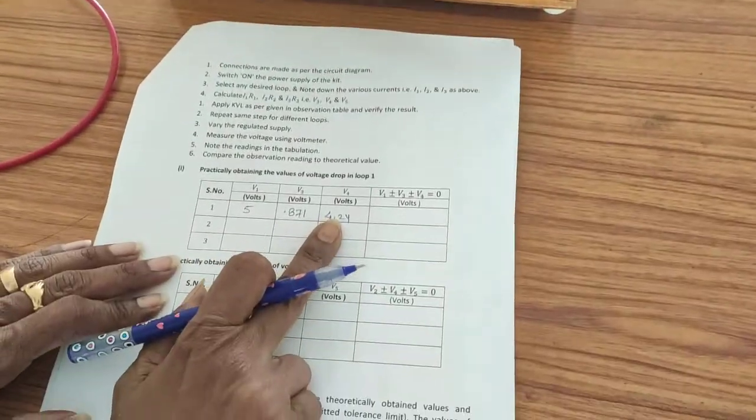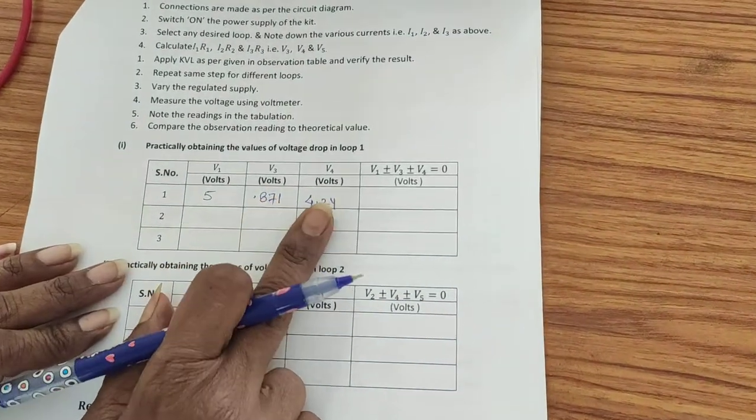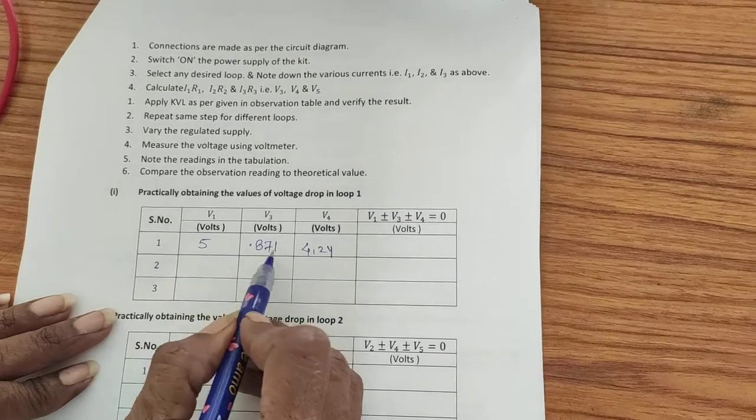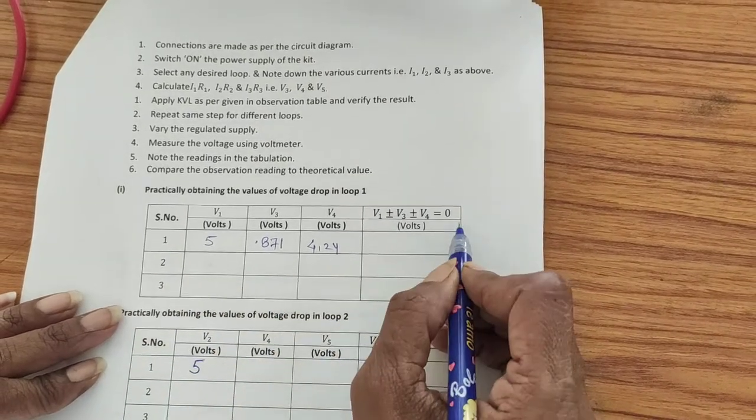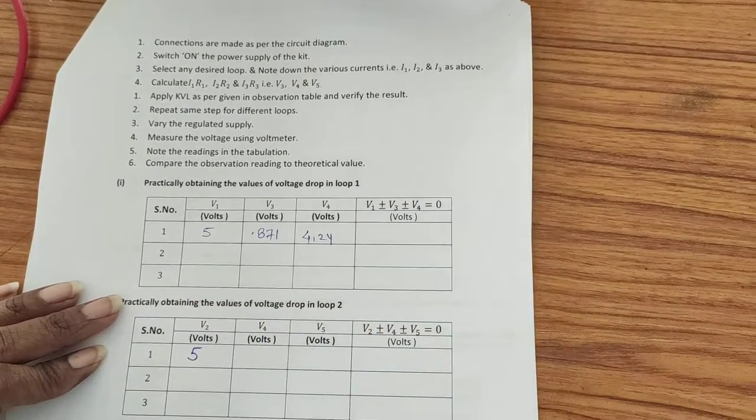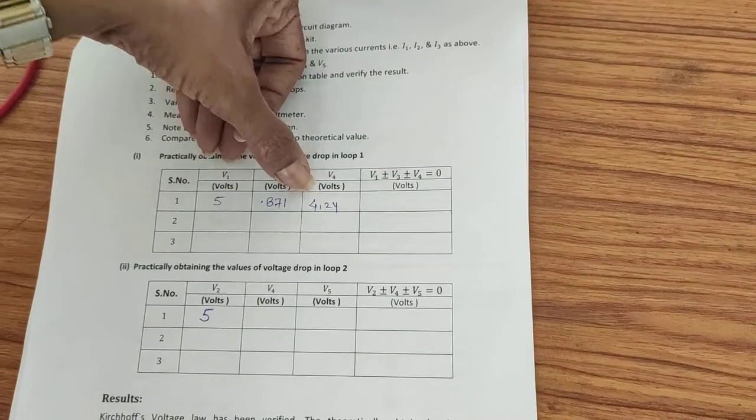If I add these readings with correct polarities, the addition of these three voltages will equal zero. These are the measured values verifying KVL for loop 1.